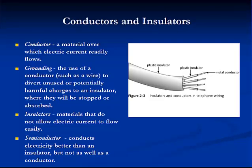A conductor is a material over which electrical current readily flows. Grounding is the use of a conductor, such as a wire, to divert unused or potentially harmful charges to an insulator, where they will be stopped or absorbed. Insulators are materials that do not allow electrical current to flow. Semiconductors conduct electricity better than an insulator, but not as well as a conductor.